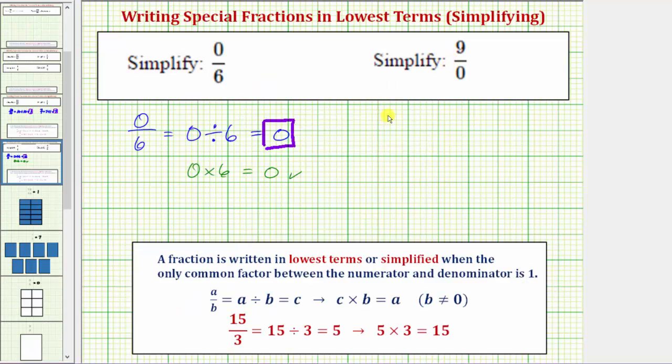For the second example, we have nine over zero, which would be equal to nine divided by zero. And because division by zero is undefined, the fraction nine over zero is also undefined.